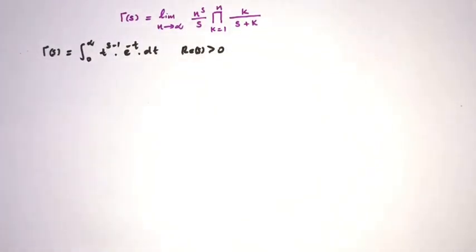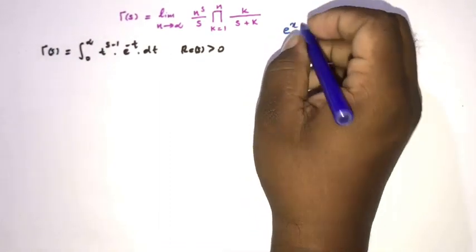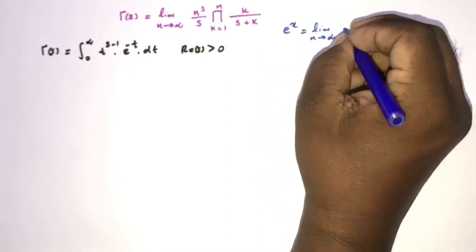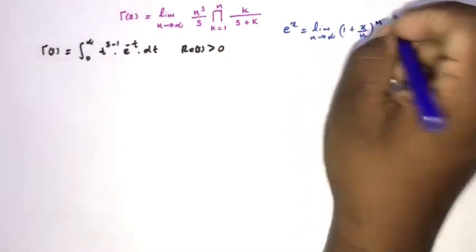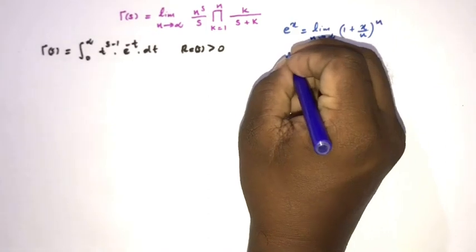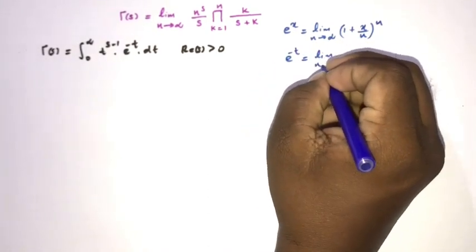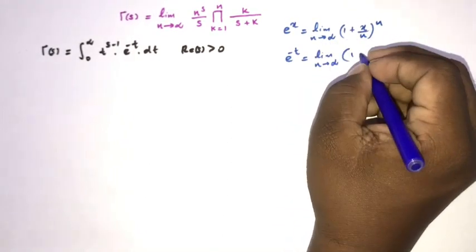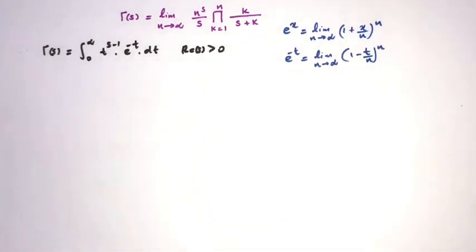We know the limit definition of e^x: e^x equals the limit as n approaches infinity of (1 + x/n)^n. Here we have e^(-t), so substituting x with -t, we get the limit as n approaches infinity of (1 - t/n)^n.